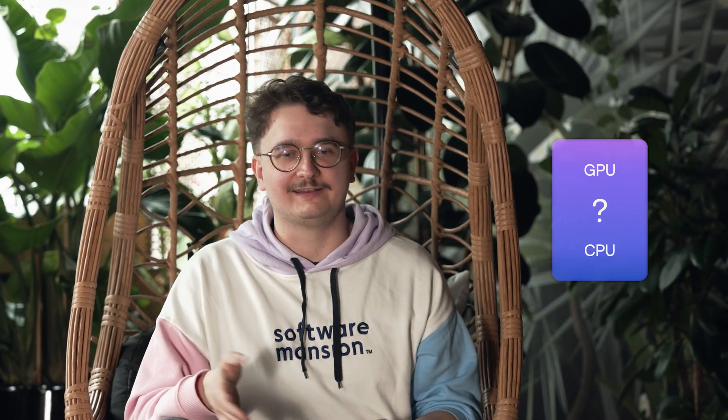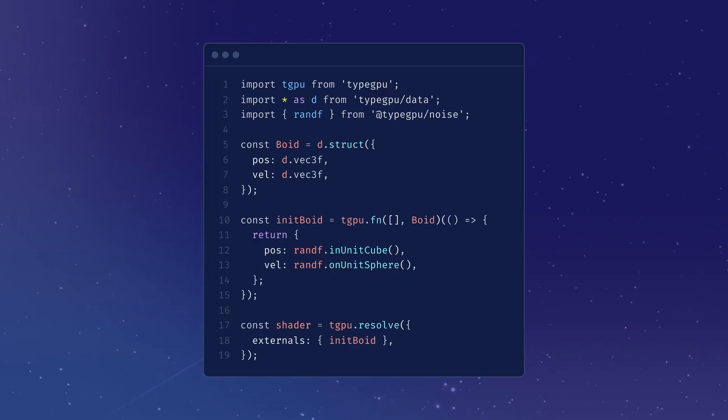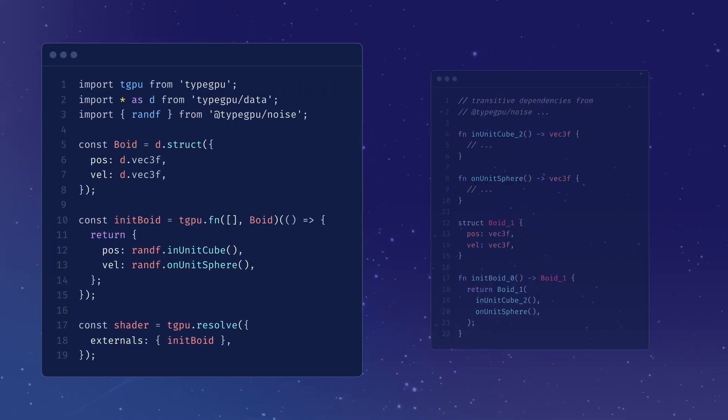Now, we could take this pattern to the extreme and transpile JavaScript around the GPU, but we're not that crazy. Introducing TypeGPU — a set of typesafe primitives that bridge the gap between TypeScript and WebGPU. Our data schemas mirror WGSL syntax, and you can use them to create typed buffers on the JS side and generate matching shader code. You can just pass JS objects and arrays to the GPU without having to worry about how they're represented in binary.